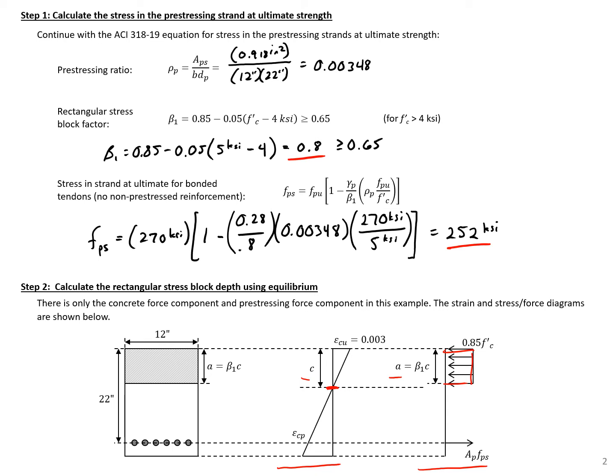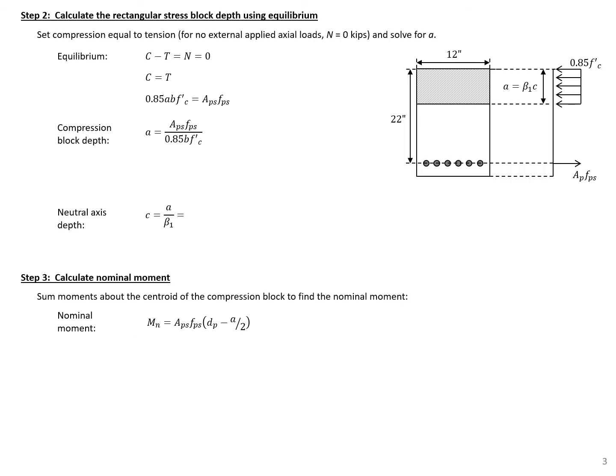Our compression force is A times 0.85 f prime c times the section width, and the tension force is A sub p times f sub ps. With no external axial load, we set compression equal to tension. This lets us solve for A, the compression block depth, as it's the only unknown.